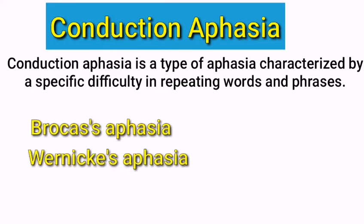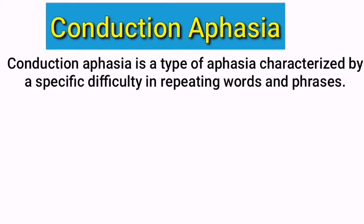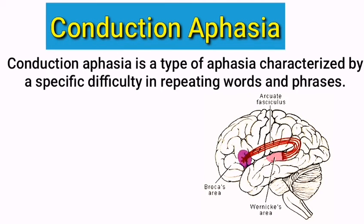This kind of language disorder occurs due to damage to the arcuate fasciculus — a bundle of nerve fibers that connects Broca's area and Wernicke's area in the brain.